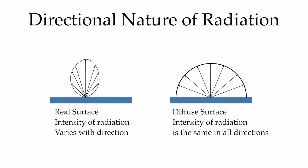As mentioned, radiation can be very directional. A real surface may emit the highest amount of radiation in the normal direction, with decreasing emission at angles closer and closer to parallel to the surface. It simplifies calculations greatly if we can assume the surface is diffuse — that is, it emits the same amount of radiation in all directions.